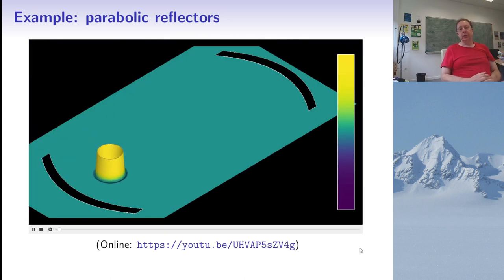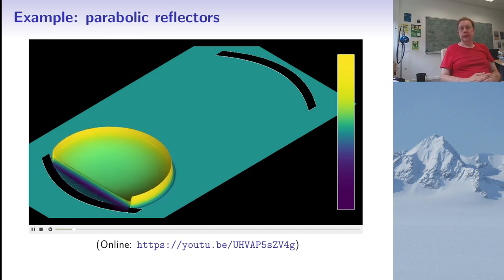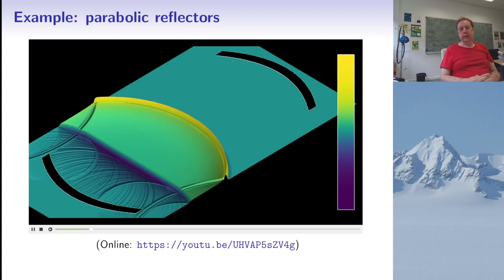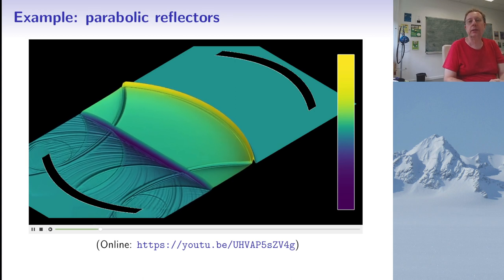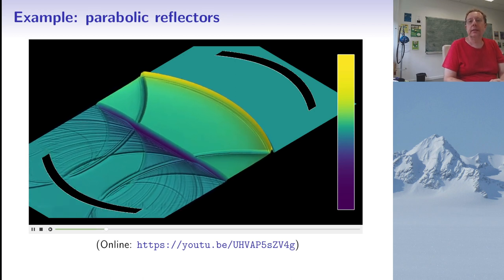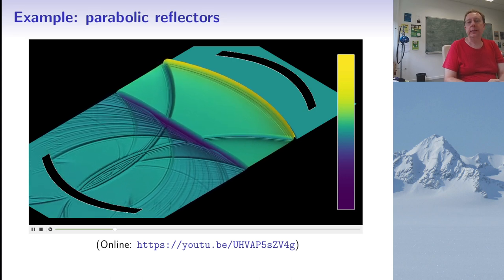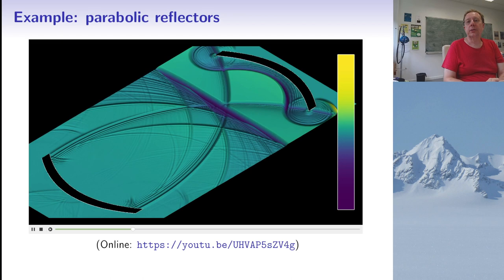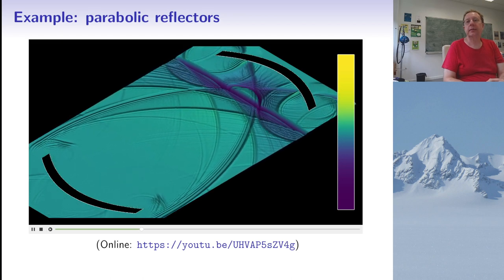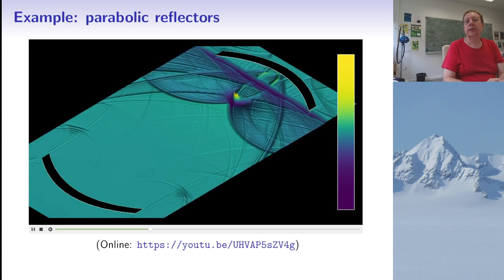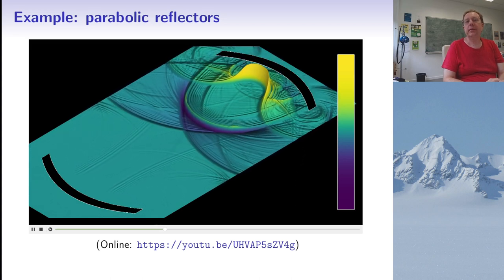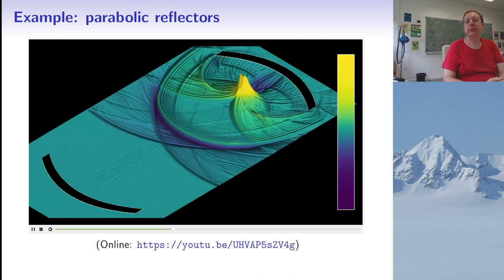Here is a three-dimensional render of a similar situation. The wave equation has been solved in two dimensions and I use the third dimension to represent the height of the wave. Again we have a pulse emitted at the focal point of the left-hand parabolic reflector. You see first the non-reflected part propagating, then it hits the right-hand reflector and is concentrated to some extent. Then the linear part is reflected and turned into a circular wave, giving a much larger peak.